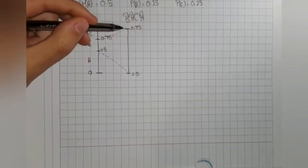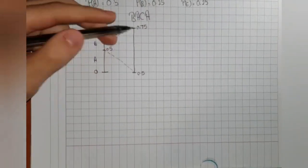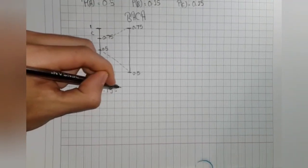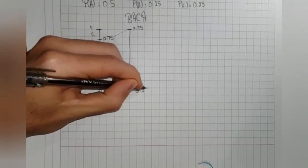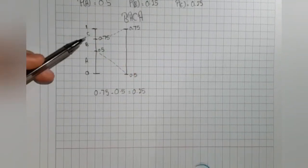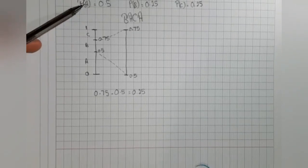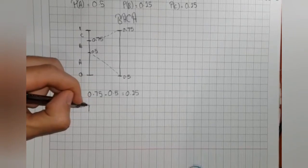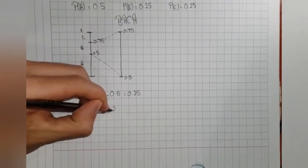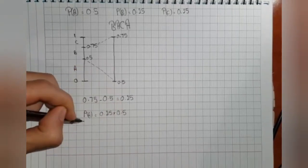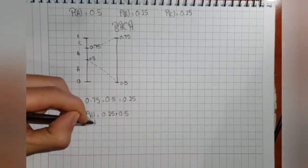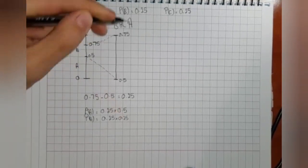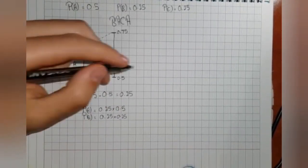Our new interval line will be between 0.5 and 0.75. We have a distance which is 0.75 minus 0.5, which is 0.25. We should locate each probability according to this distance. pa will be 0.25 times 0.5. pb will be 0.25 times 0.25.